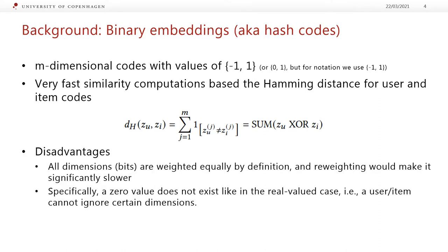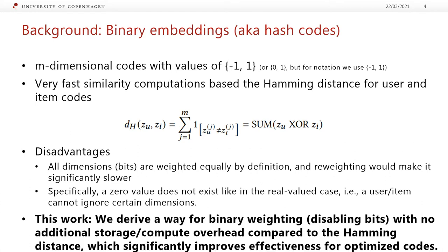However, there are certain disadvantages to this, even though it's pretty fast. All dimensions or all the bits are weighted equally by definition, and re-weighting would make it significantly slower. More specifically, the 0 value does not exist as it does in the real-valued cases. For example, when we had a real-valued vector, then some dimension could simply be 0 for a given user, and that would not impact the inner product computation. However, we don't have that here, as they are all part of the computation. So this is what we want to solve.